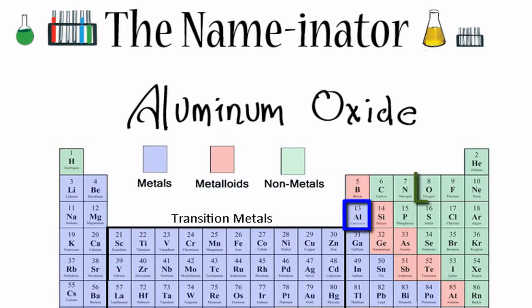We know that aluminum is a metal, and oxygen is a nonmetal. That means it's going to be ionic, and we're going to need to think about the ionic charges.